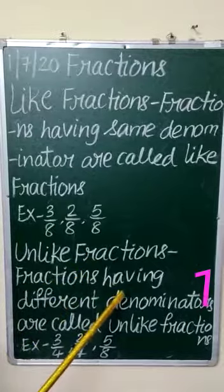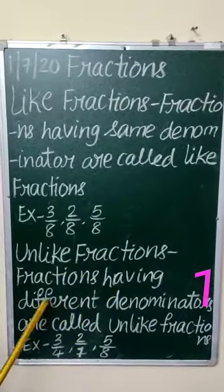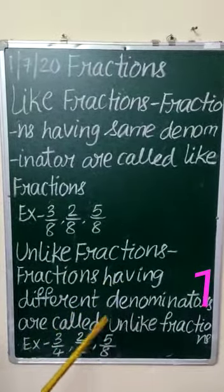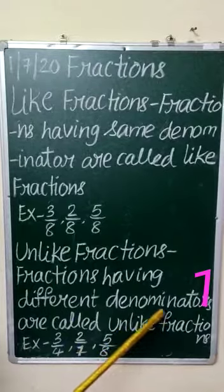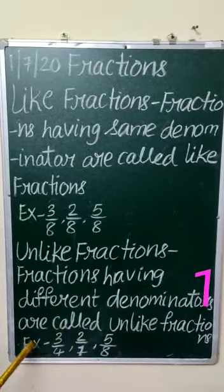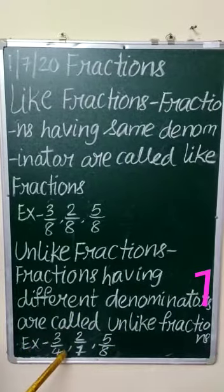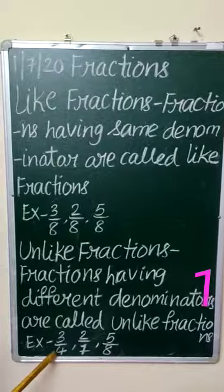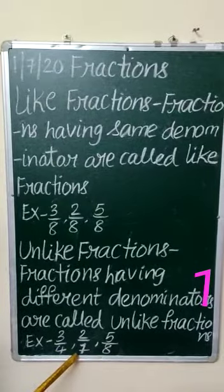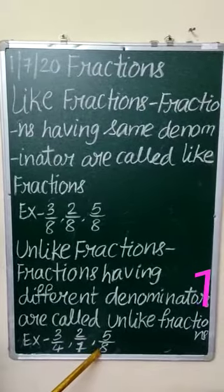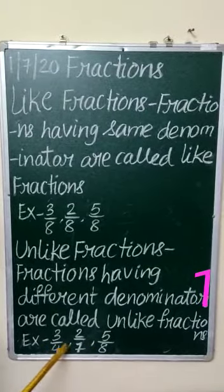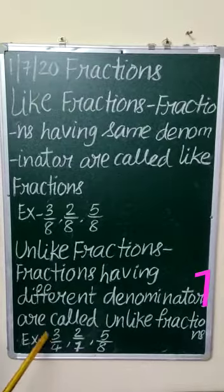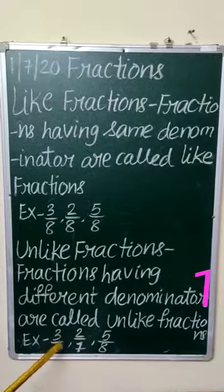Fractions having different denominators are called unlike fractions. For example, 3 by 4, 2 by 7, 5 by 8 — here the denominators are 4, 7, and 8. These three denominators are different, so these are unlike fractions.